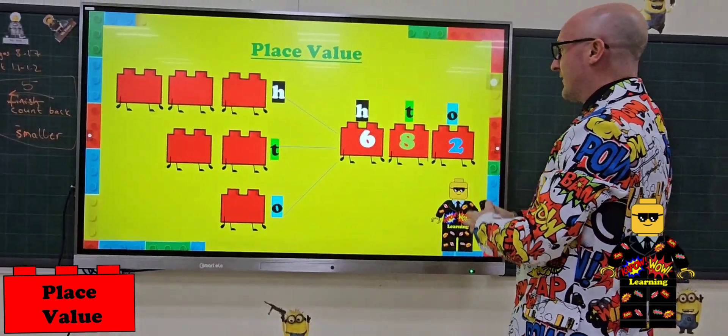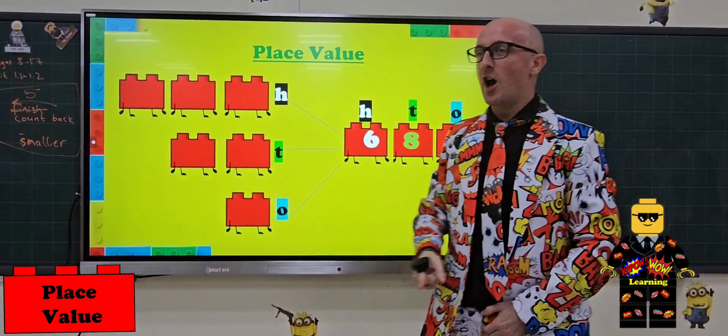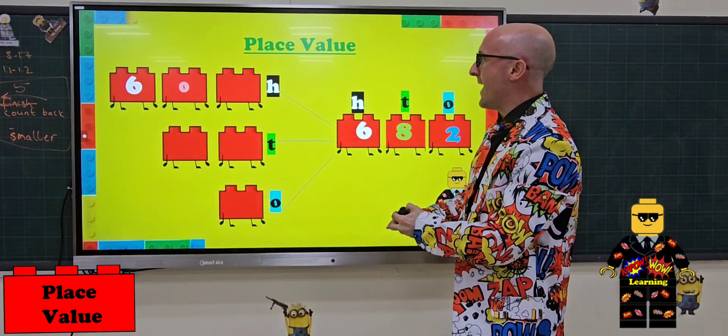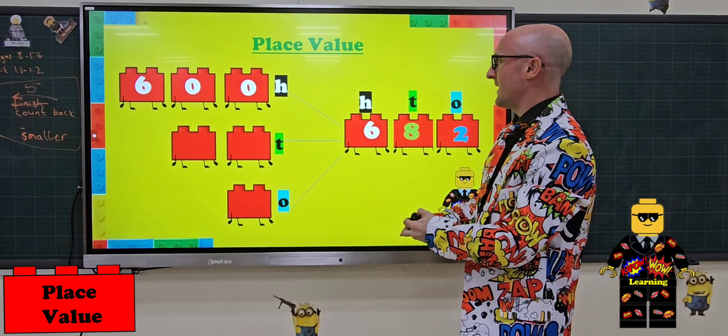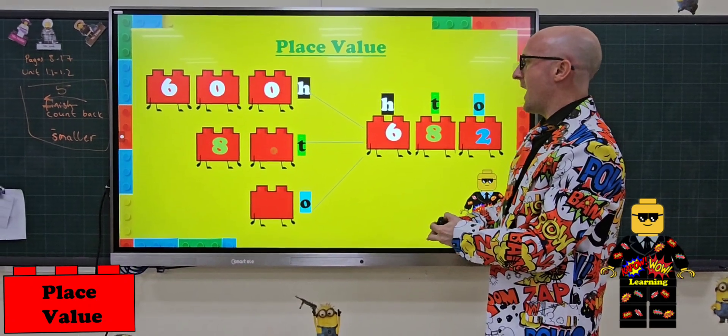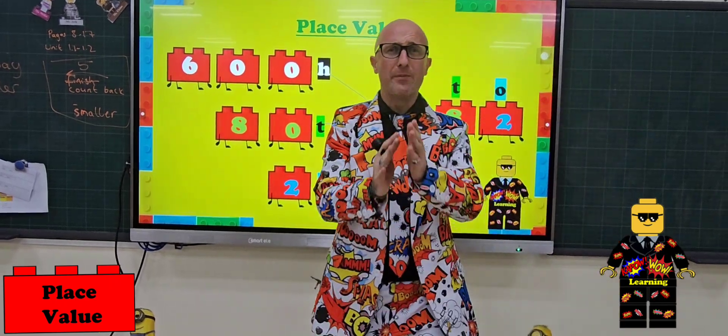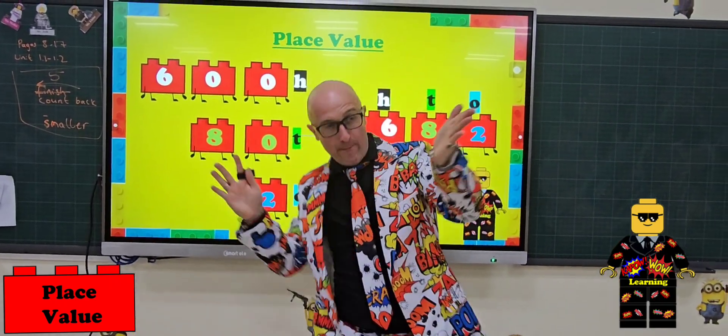And next one. We've got 6, 8, 2. So... 60 in the 100, 18 in the 100s. Always slowly. So 600 in the 100s. 80 in the 10s. 2 in the 1s. Wow! Give him a Kapowow clap!